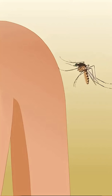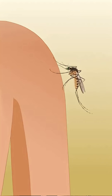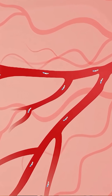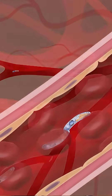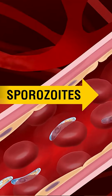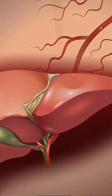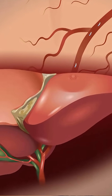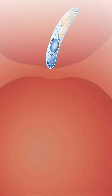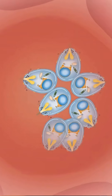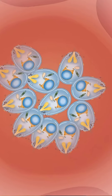When a female Anopheles mosquito bites a human, it injects sporozoites — the infective form of plasmodium — into the bloodstream. These sporozoites travel to the liver and enter the liver cells, where they multiply and form merozoites.